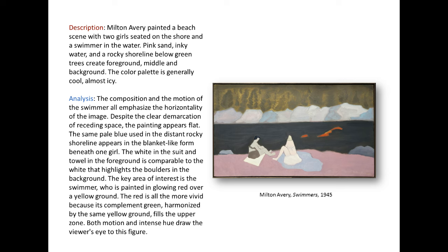The same pale blue used in the distant rocky shoreline appears in the blanket-like form beneath one girl. The white in the suit and towel in the foreground is comparable to the white that highlights the boulders in the background. The key area of interest is the swimmer, who is painted in glowing red over a yellow ground. The red is all the more vivid because its complement, green, harmonized by the same yellow ground, fills the upper zone. Both motion and intense hue draw the viewer's eye to this figure.